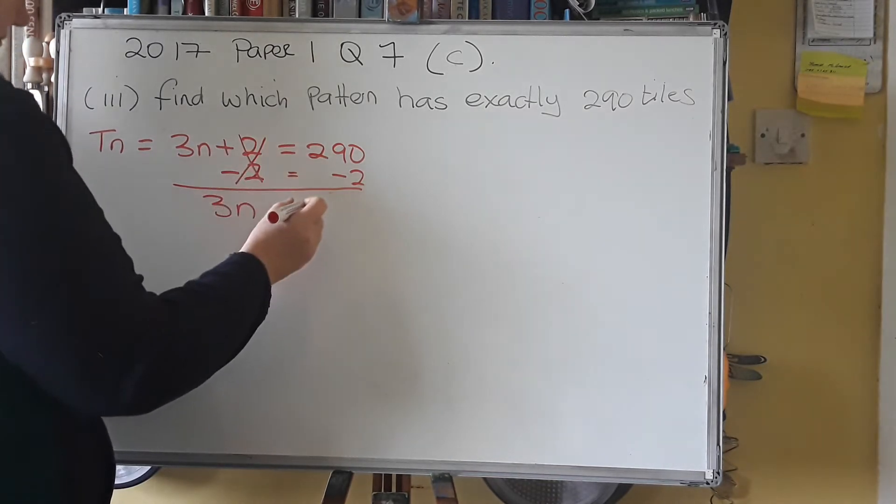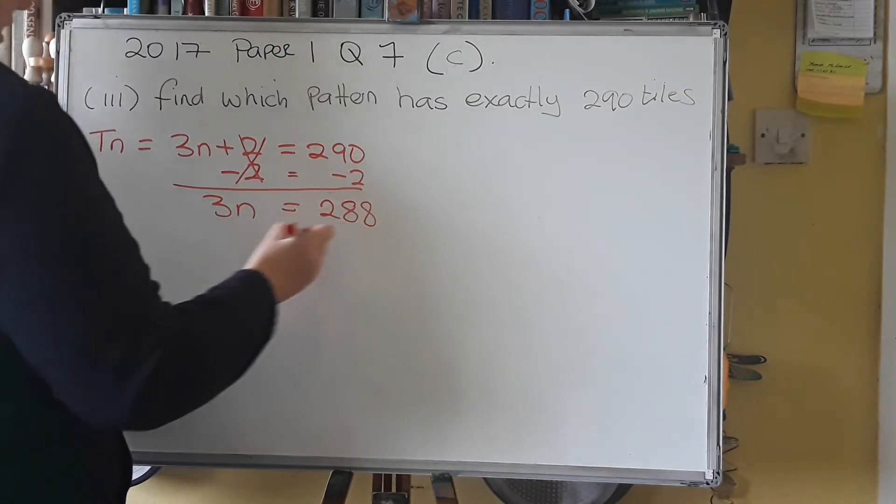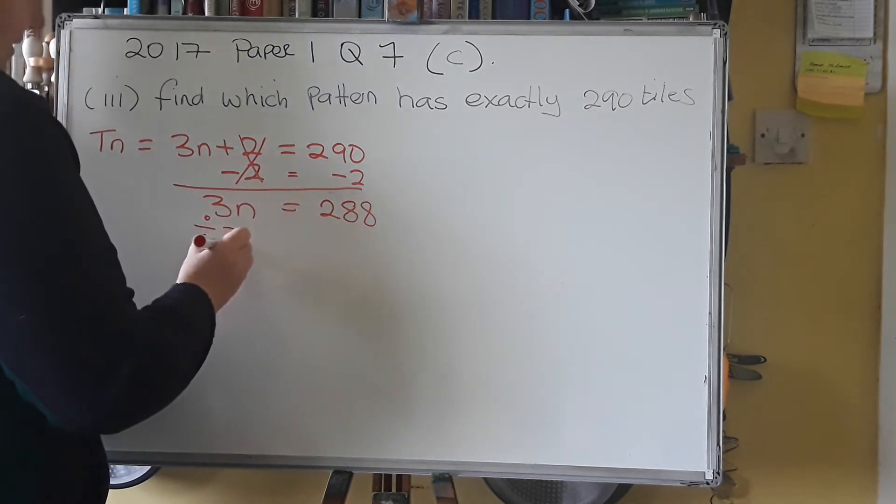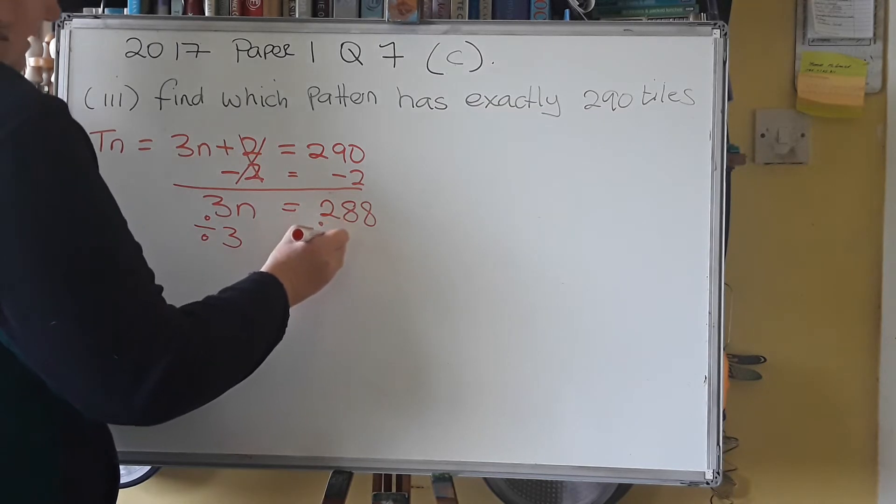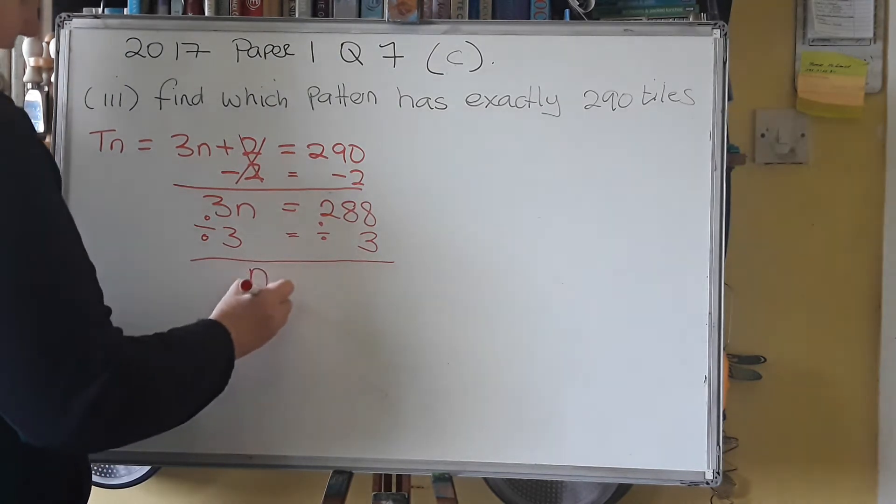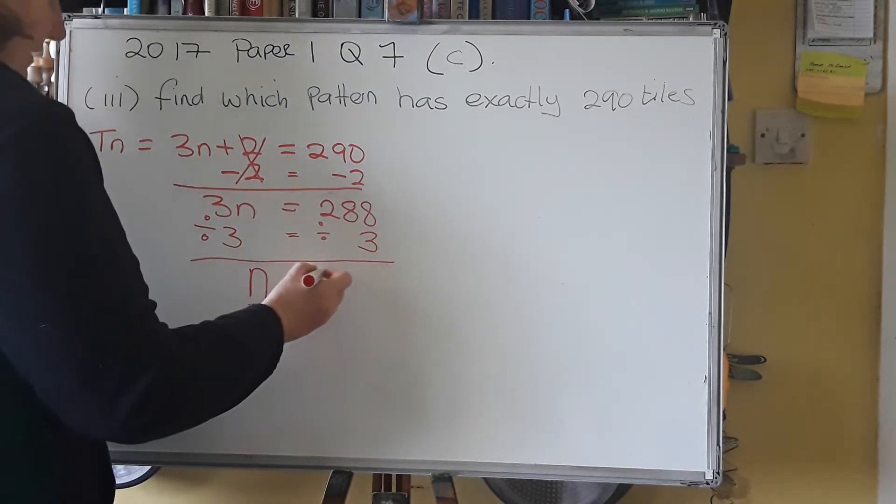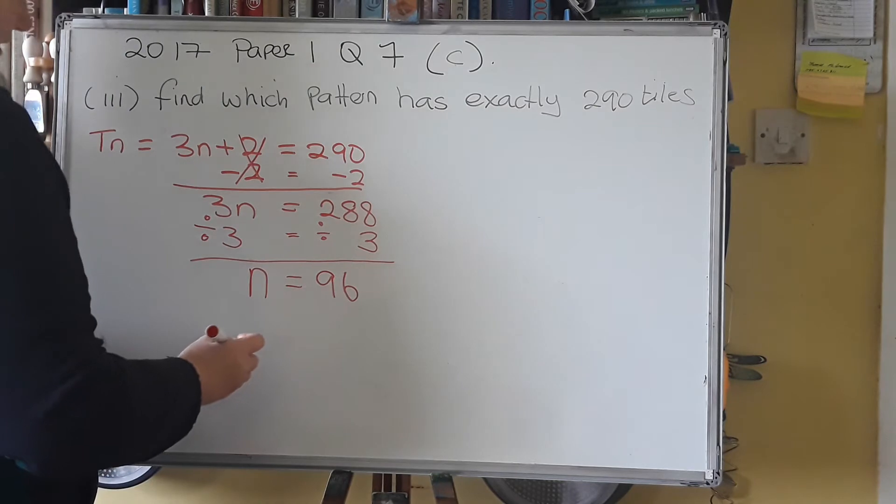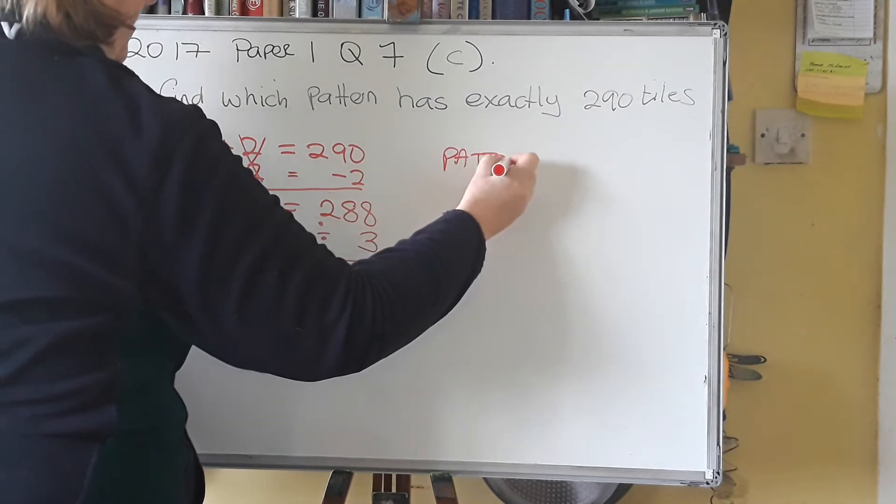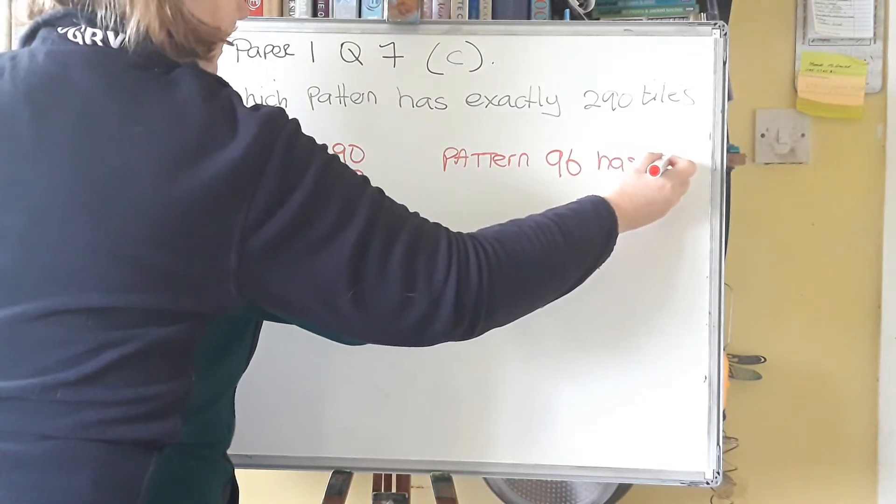Equals 290 minus 2 is 288. So if 3 of them is 288, to find out what one of them is, divide by 3. And again, whatever we do to one side of the equals, you always do to the other side of the equals. Keep the balance. So you're left here with n equals 288 divided by 3 gives you 96. So the answer is that pattern 96 has 290 tiles.